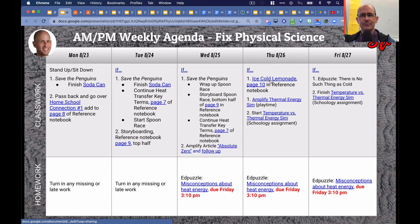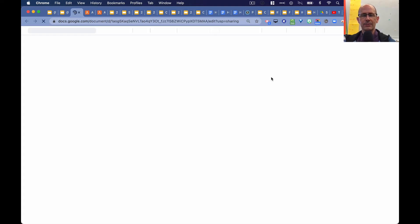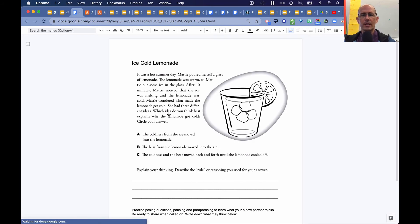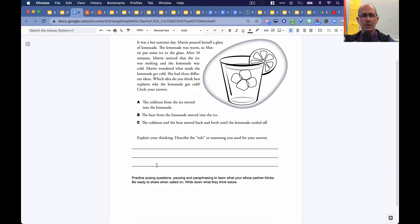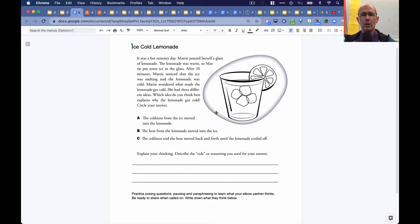Then on Thursday, we did the ice-cold lemonade activity. So students read about it. They made their choice, and then they had to explain their thinking. And then they had to pose questions, pause, and paraphrase to learn what their elbow partner thought. And then we went through it and we marked it up about what was actually happening. The choice was actually B, heat from the lemonade moved to the ice. Because, again, heat is the transfer of thermal energy from an area of higher temperature, the warm lemonade, to the area of colder temperature or lower temperature, which is the ice cube. So that's why it's B.